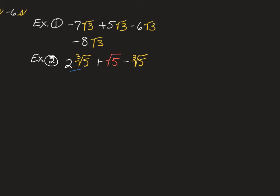So the only two that we can add are these two. Therefore, we have 2 cubed root of 5 minus, remember please, that there is an understood 1 right here in front of this cubed root of 5. Therefore, 2 cubed root of 5 minus 1 cubed root of 5 leaves only 1 cubed root of 5. We don't need to write the 1 out there. And we also still have this plus square root of 5 added.